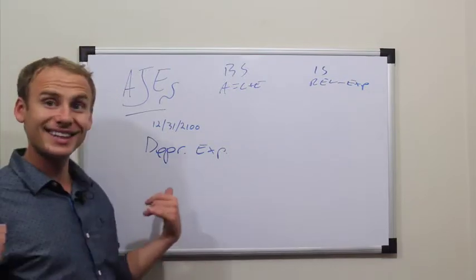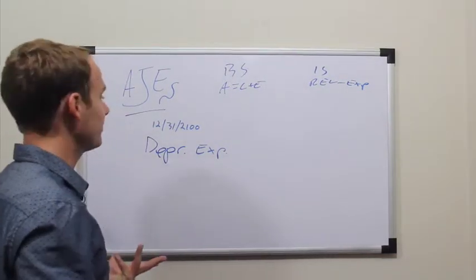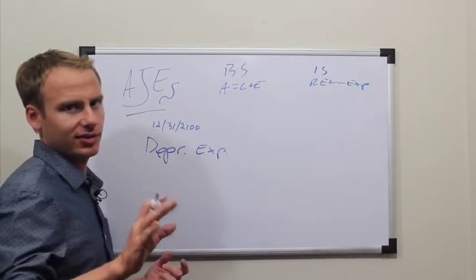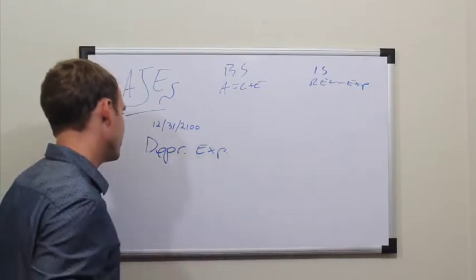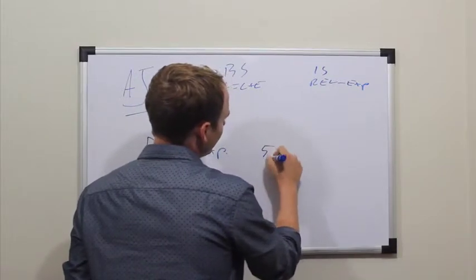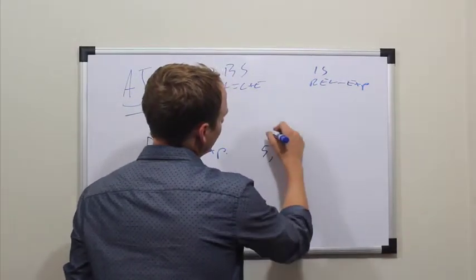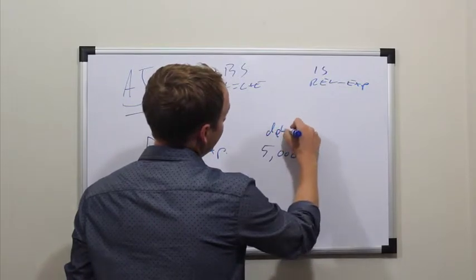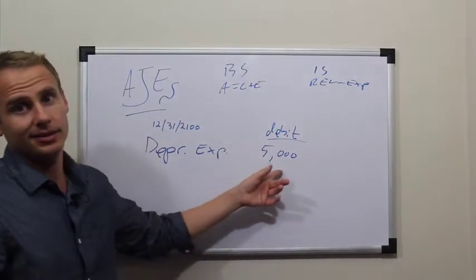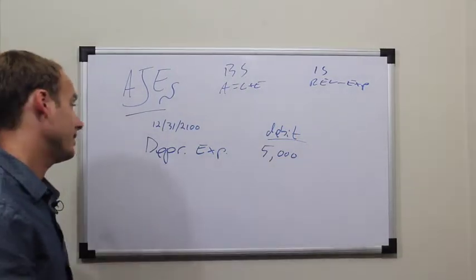You know, not as good as it was last year as it was this year. Or is it the opposite? Whatever. Cars get old, depreciate them, they go down. So we say $5,000, this being debit. Debit expense increases.